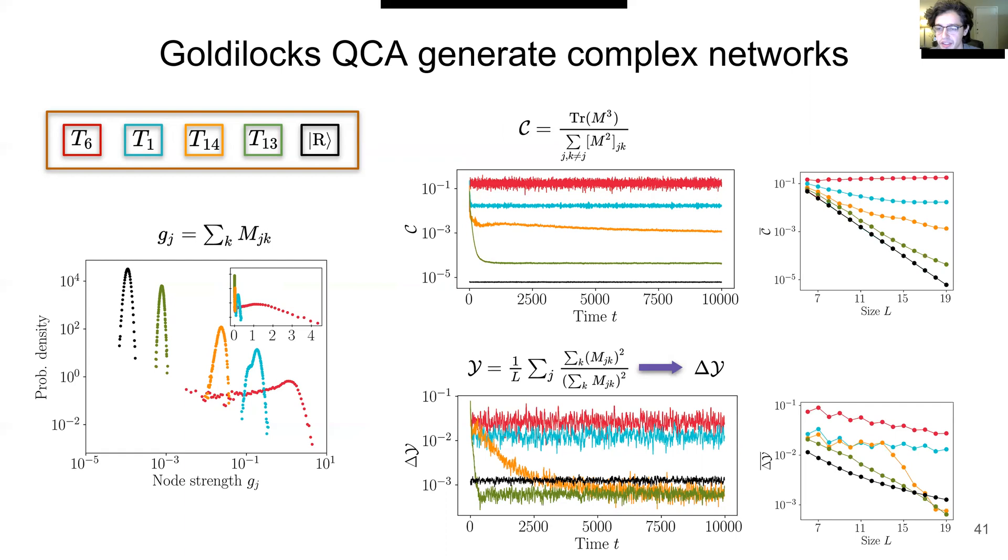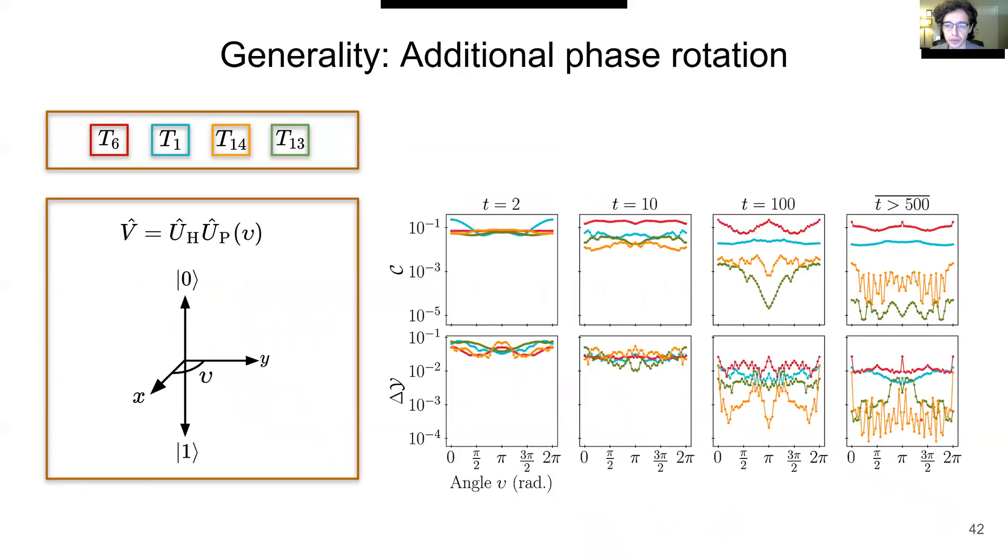We can show that these results are robust to system size. As system size increases, the Goldilocks rule maintains the highest long-time average of clustering and disparity fluctuations. We can show our results are general if we change the local update gate from a Hadamard to a Hadamard times a phase gate. The phase gate rotates the Bloch vector around the z-axis by an angle ε. In the long-time average, it is still the Goldilocks rule T6 which maintains the highest clustering and disparity fluctuations for all angles ε.